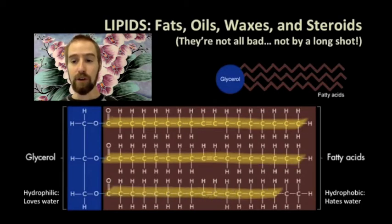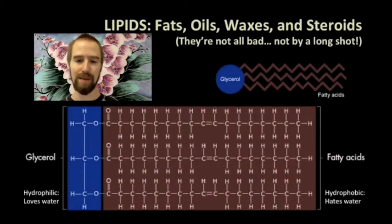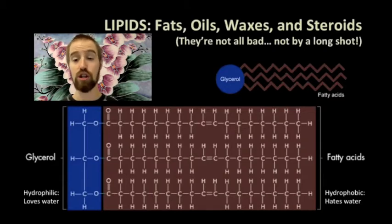If you look really closely, you can see that every carbon atom, every C, has exactly four covalent bonds, keeping in mind that a double bond or a double line is pretty much the same thing as two covalent bonds.